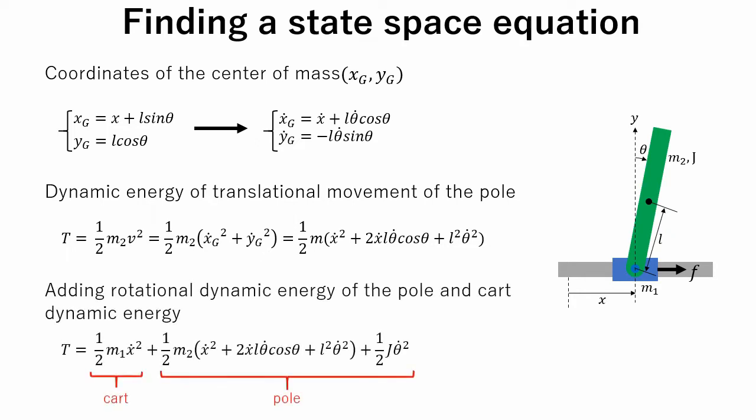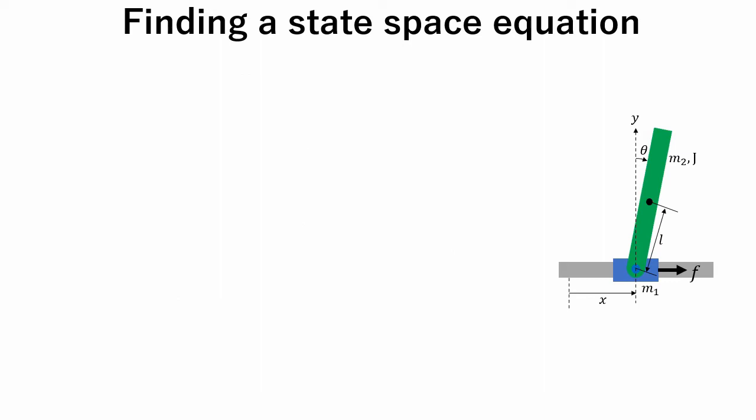Now, by adding dynamic energy of the cart and the pole, dynamic energy of the whole system is calculated. Calculating potential energy of the whole system is simple. If the center of the pole rotation point is taken as a reference, the potential energy is expressed like this.